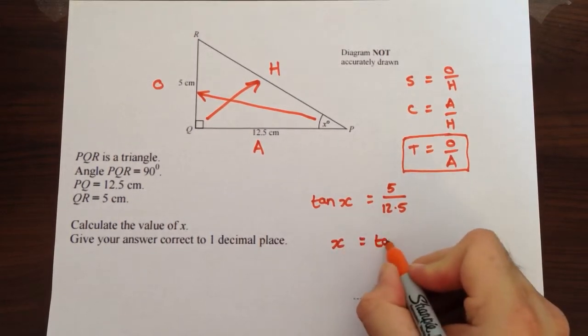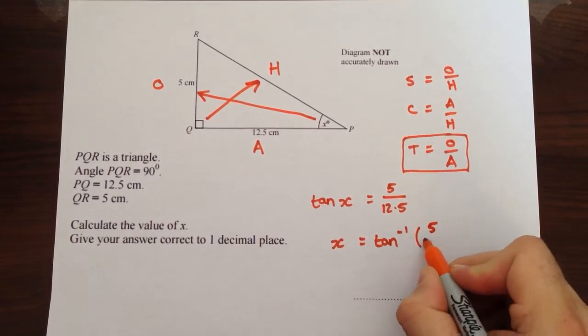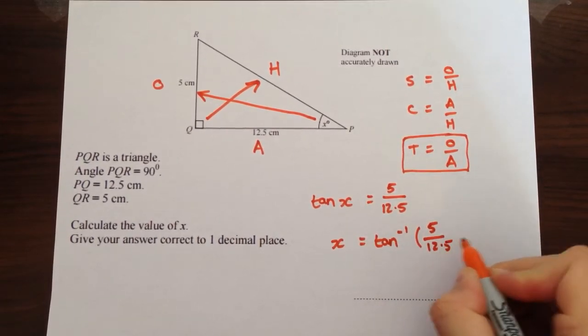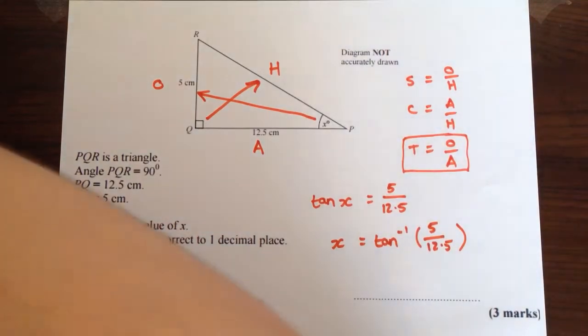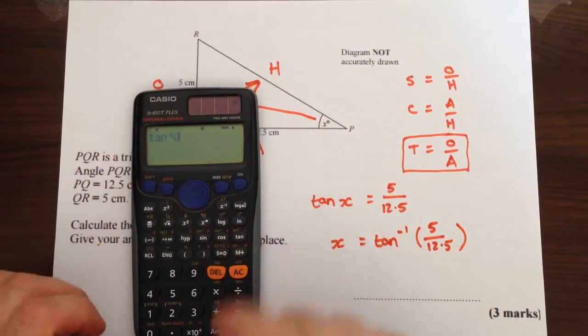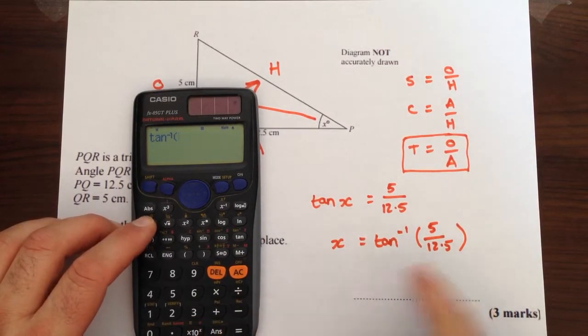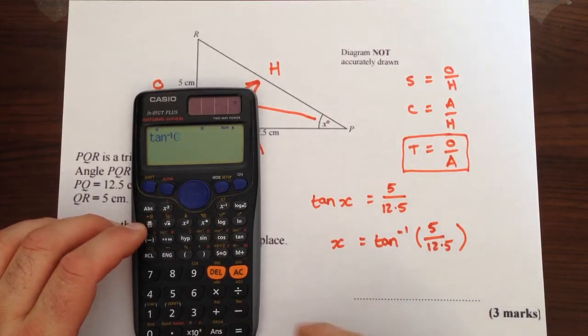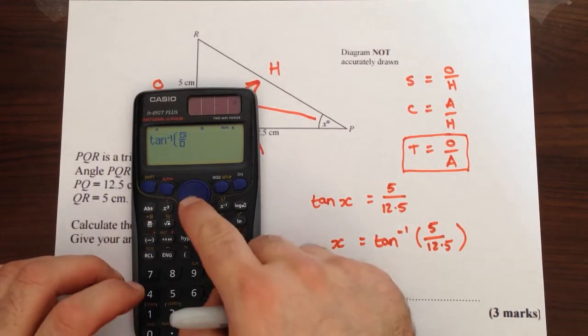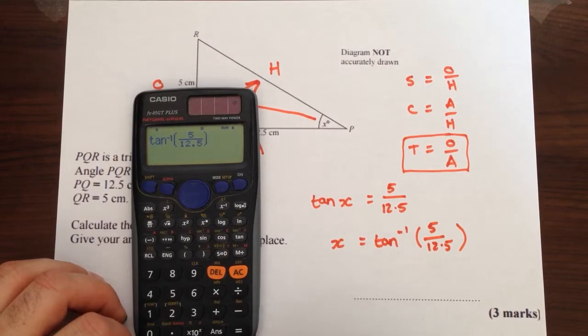So X equals tan to the minus 1, 5 divided by 12.5. Now get your calculator and press the shift button and tan. You can put it in as a fraction if you like so it looks like this, or you can just do a straightforward division, 5 divided by 12.5. So 5 over 12.5, come out of the fraction, close the brackets.